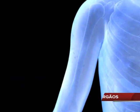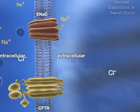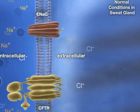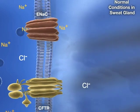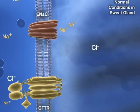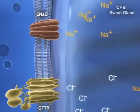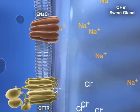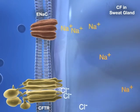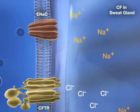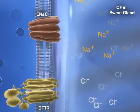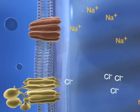In the sweat glands, CFTR is a major mediator for chloride absorption. Under normal conditions, chloride and sodium ions are reabsorbed via CFTR and sodium channels, respectively. In cystic fibrosis, chloride reabsorption is diminished due to impaired or absent CFTR protein, and sodium uptake is also reduced, resulting in increased sodium chloride in the sweat.